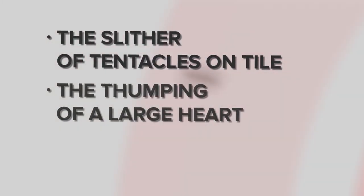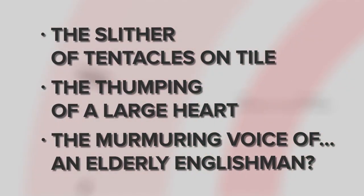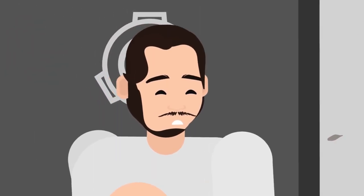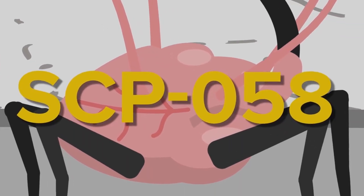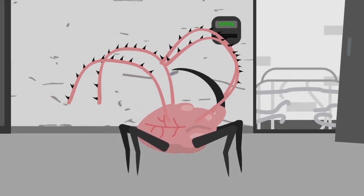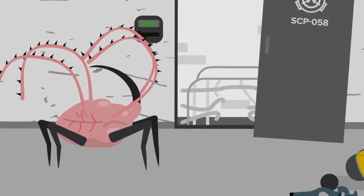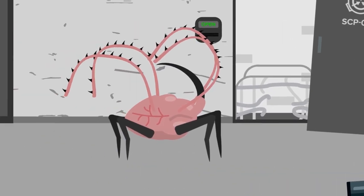The slither of tentacles on tile, the thumping of a large heart, and the murmuring voice of an elderly Englishman? Poor Markiplier. Video games definitely wouldn't have prepared him for the arrival of SCP-058, the Heart of Darkness. It's come out of its cage, and it's doing just fine. But the same can't be said for any living thing that this creepy, animate, and highly hostile creature encounters.